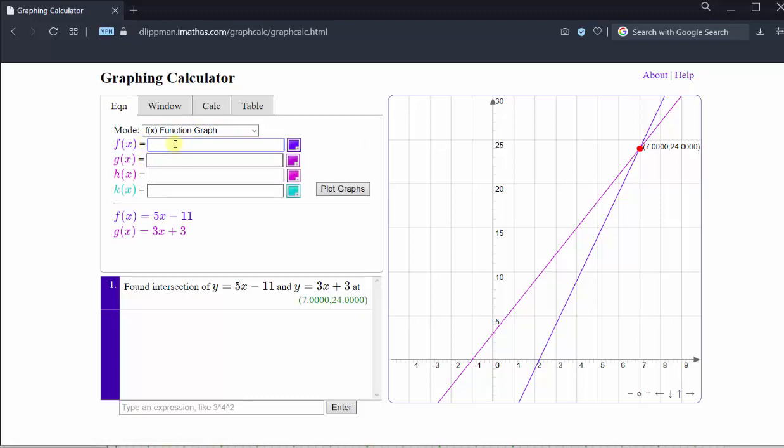For f of x, we enter 0.25, open parenthesis, x minus 3, close parenthesis, raise to the power of 2, minus 5. G of x is equal to negative 1 divided by 10 times x to the second power plus 2.